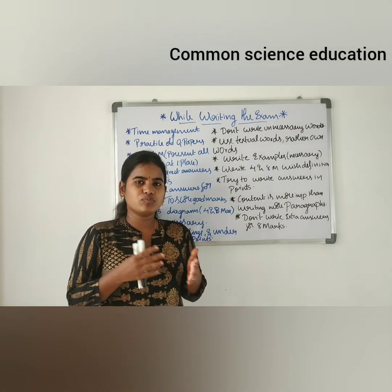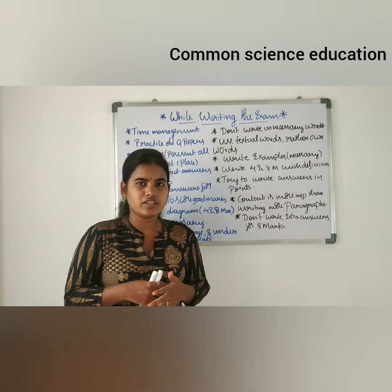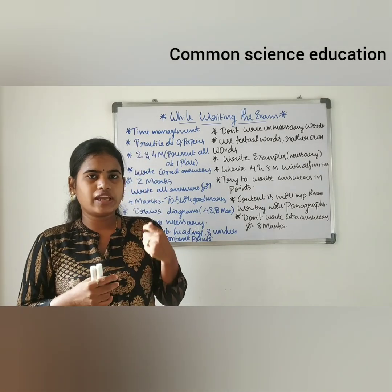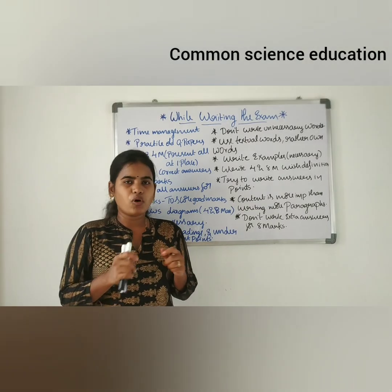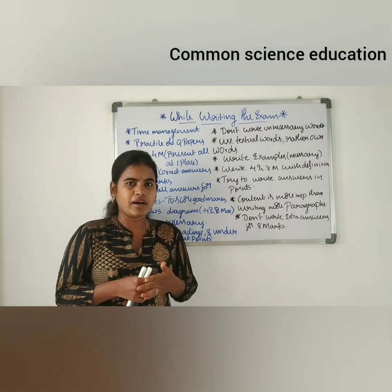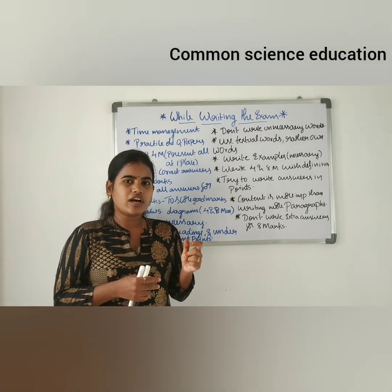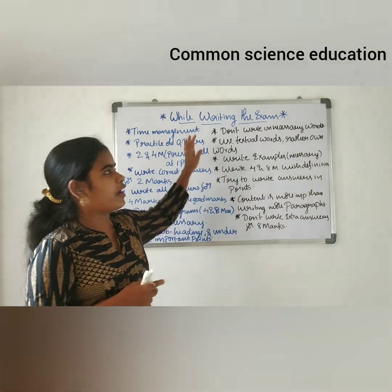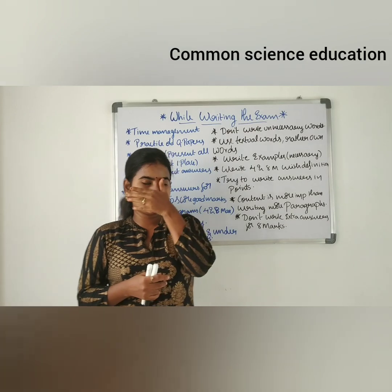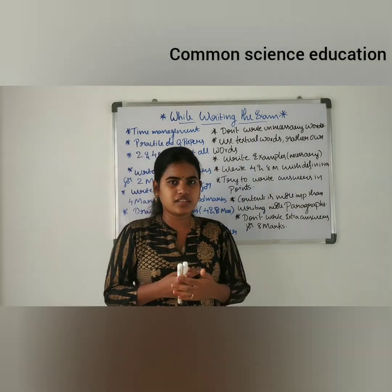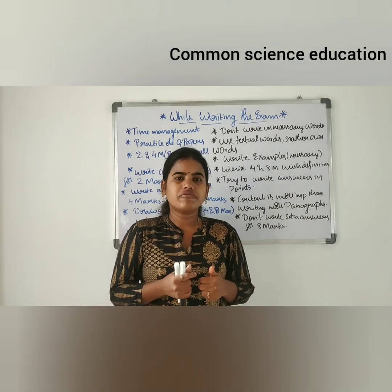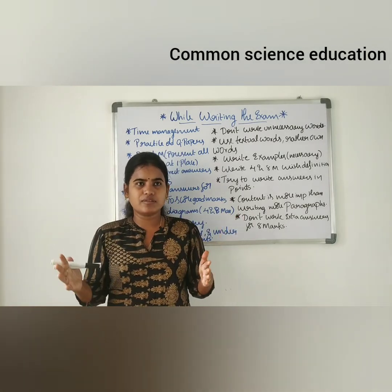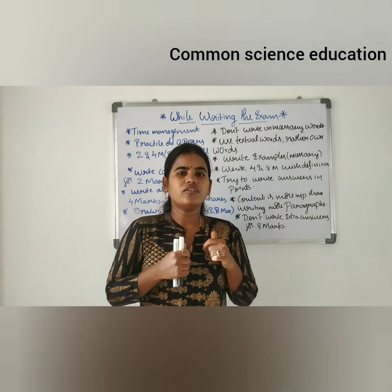So, for intermediate exams — botany, zoology, first year, second year — paper presentation tips are needed. Here are some points you need to follow so you can score good marks. If you follow these points, you will definitely have 55 to 60 marks, and you can score easily.